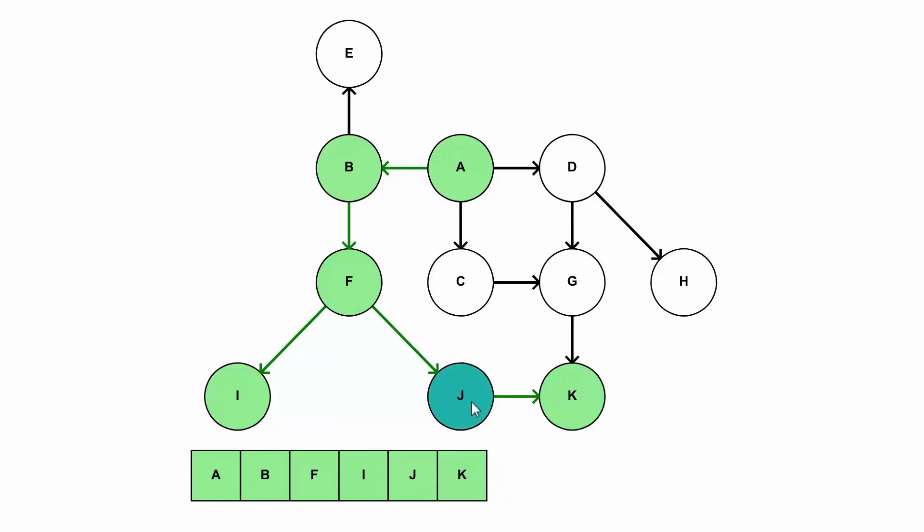Now K returns. So we go back into J. J returns. So we go back into F. Now F can return. It doesn't have any more children that haven't been explored. So it returns, which gets us back to B.